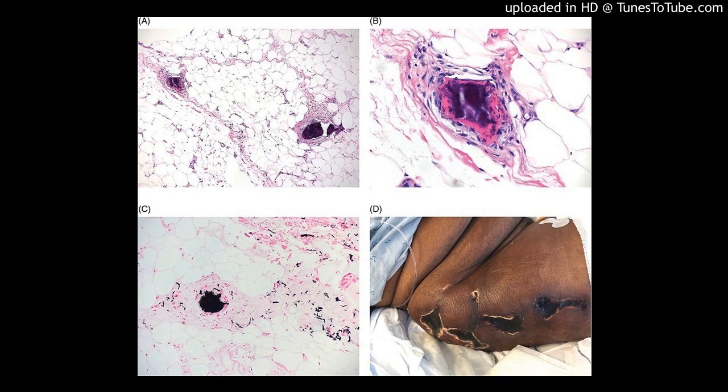Methods: We conducted a descriptive, retrospective review of biopsy specimens collected over a two-year period. Only specimens with a histologic and clinical diagnosis of calciphylaxis were included. Specimens were then histologically examined for features of PXE in the dermis and/or subcutaneous fat, utilizing hematoxylin and eosin staining. Von Kossa and Verhoeff-van Gieson special stains were also performed to examine calcification and elastic fibers, respectively.